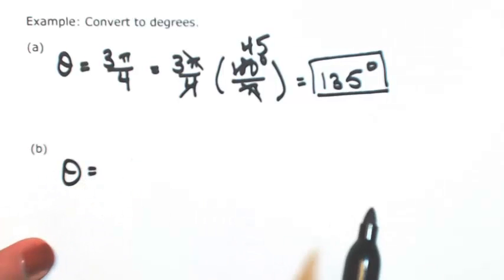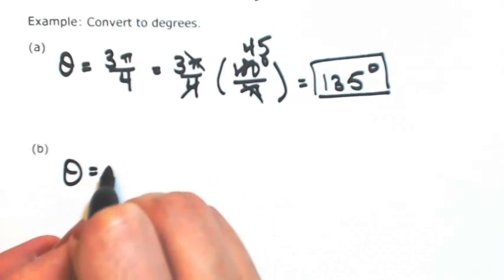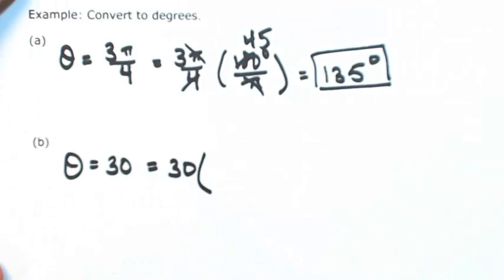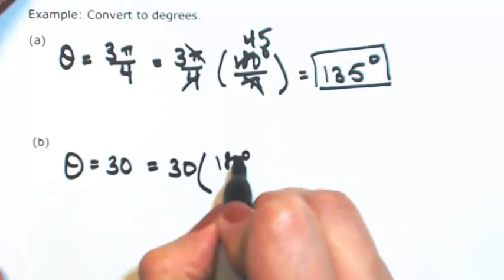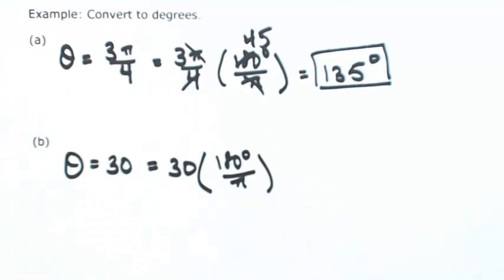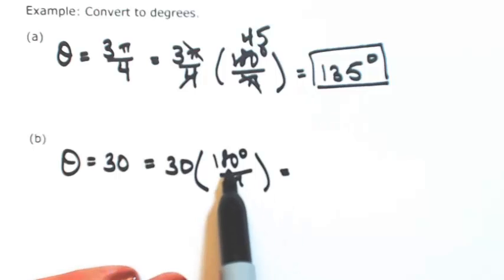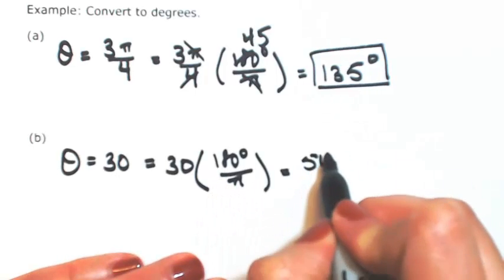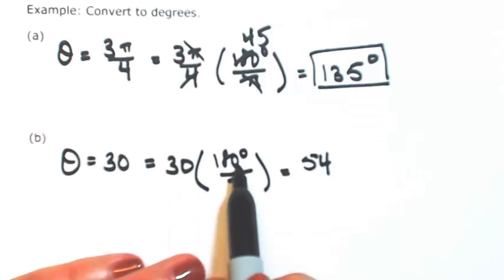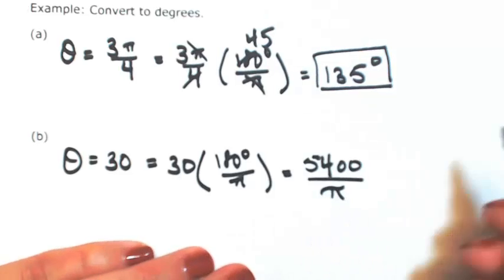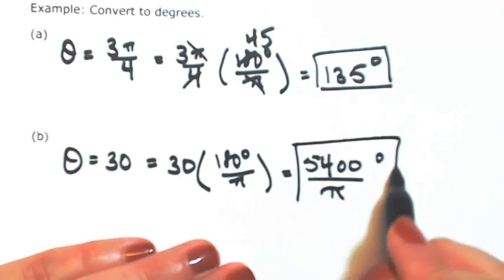All right, one more. Let's say that theta is 30 radians. So if I want to change this over into degrees, then I would multiply this again by 180 degrees divided by pi. Nothing cancels. We're just going to multiply this out. So 18 times 3 would be 54, and then 10 times 10 is 100. Divide this by pi. Looks crazy, but yeah, this is our answer.